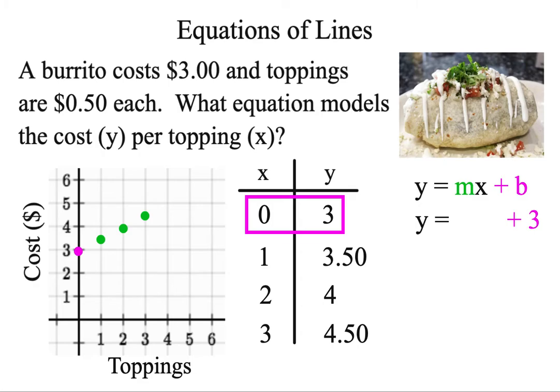Because the increase is constant, that's why a line is the model for this. If the costs change, like after a certain number of toppings, if it dropped down to $0.25, notice the curve would kind of flatten out, but it just keeps climbing at the same rate. That's why it's a line.